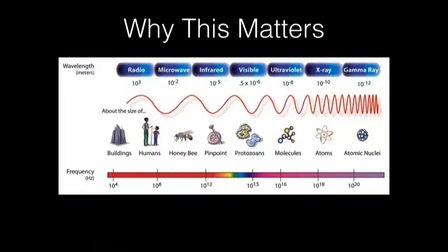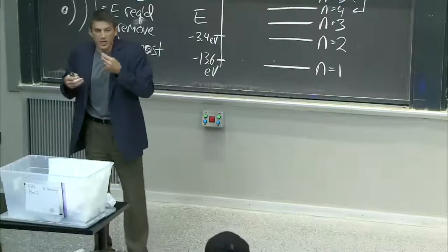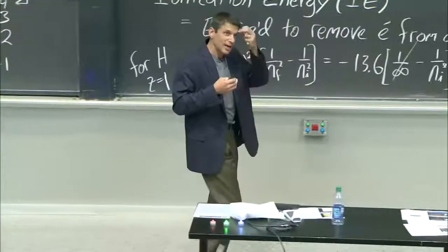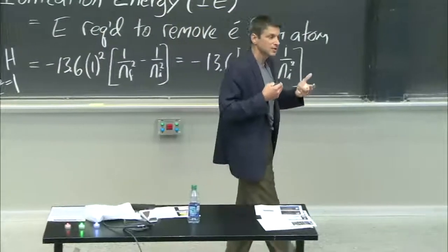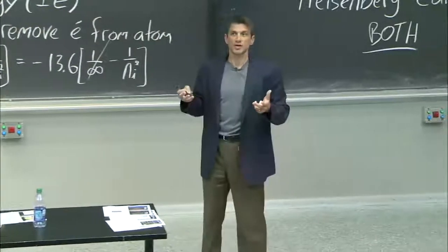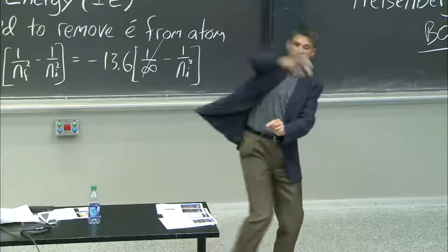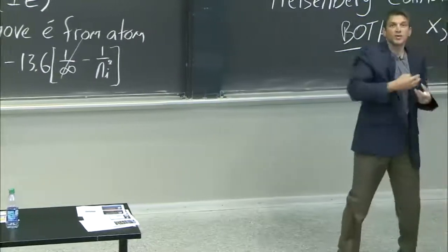If you look at the frequency here of light — this is an electromagnetic spectrum: radio, microwave, infrared, visible, UV. Now, here's the thing. If you want to see some feature size, you're limited by the wavelength of the light. It can't be bigger than the features you're looking at, roughly. So if you're trying to see something tiny but the wavelength of light is really big, you won't see it.